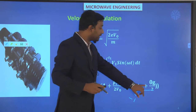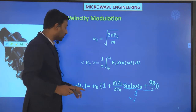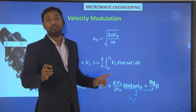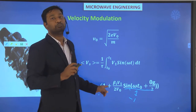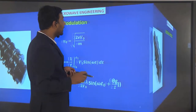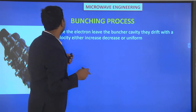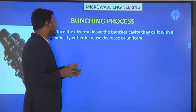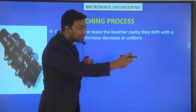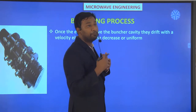When the sine part equals zero, we get vt1 equal to V0. So three conditions arise: velocity greater than V0, less than V0, and exactly V0. Due to these three conditions, velocity modulation takes place. Once electrons leave the buncher cavity, they drift with velocity either increased, decreased, or uniform — some electrons pass with greater velocity, some with lesser, and some with the same.